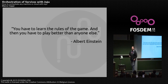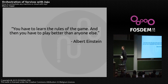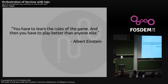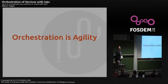To touch a bit more on getting you to market faster — working with your application, getting your ideas into production — Albert Einstein said that you have to learn the rules of the game, and then you have to play better than anyone else. With this declarative model, we've gotten pretty close to that, because orchestration really is agility. It allows you to interchange your components and test out ideas.